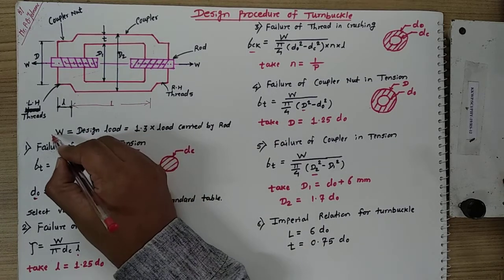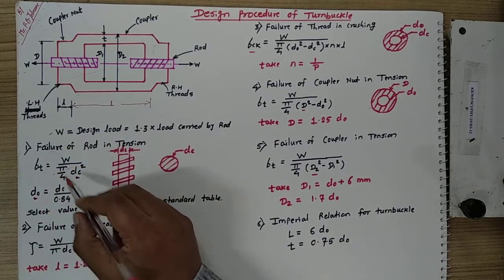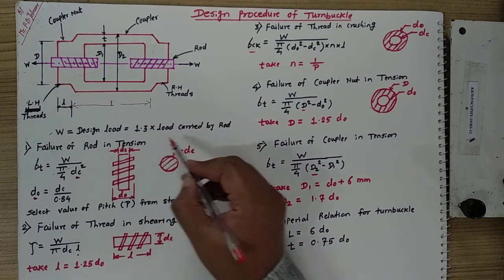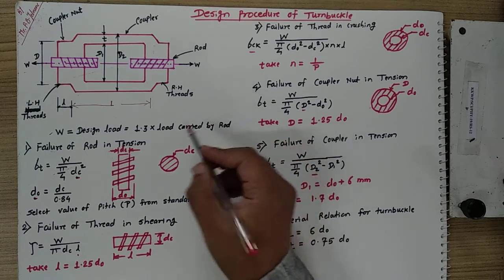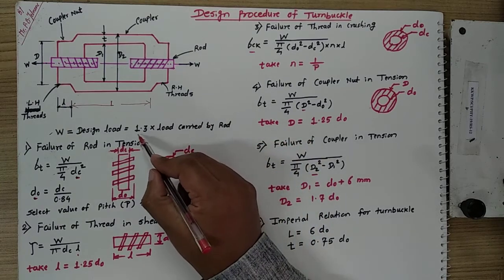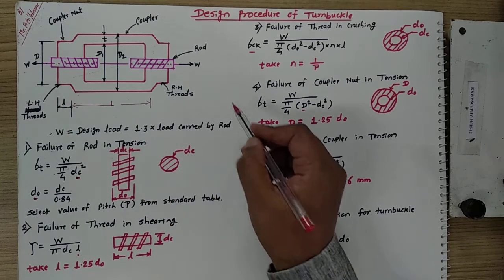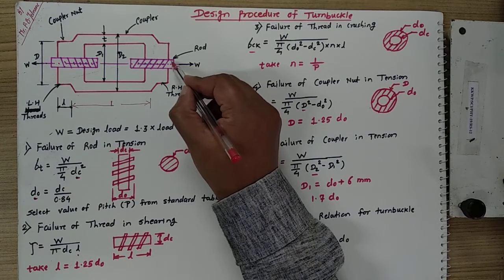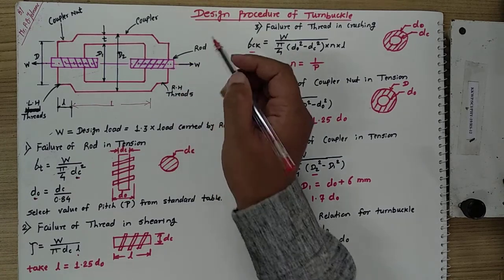Before going to design, we consider the design load: W is equal to 1.3 times the load carried by the rod, because we consider the maximum load to obtain the maximum dimensions of the threaded rod.